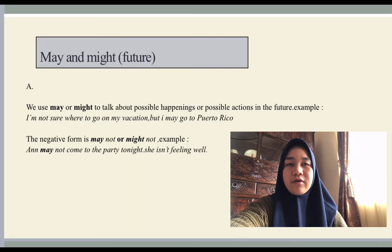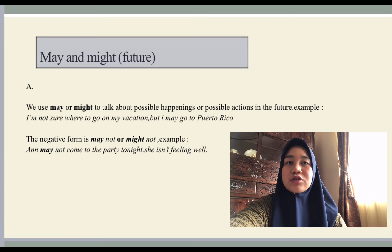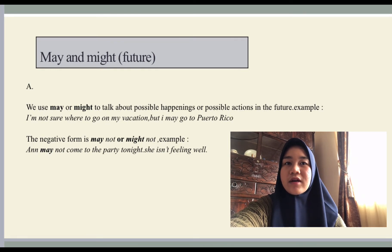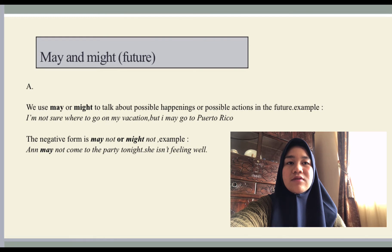The next modal verb is 'may' and 'might' for future. We use 'may' or 'might' to talk about possible happenings or possible actions in the future. For example: 'I'm not sure where to go on my vacation, but I may go to Puerto Rico,' meaning perhaps I will go to Puerto Rico. Another example: 'The weather forecast is not very good — it might rain this afternoon,' meaning perhaps it will rain. The negative forms are 'may not' and 'might not': 'She may not come to the party tonight — she isn't feeling well.'